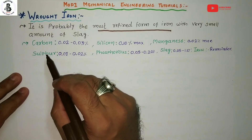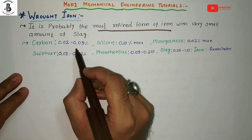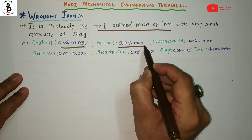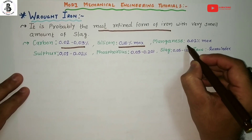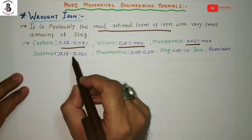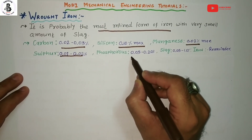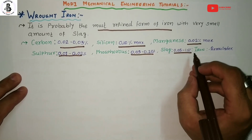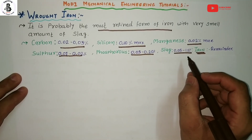Now we will see the chemical compositions of wrought irons. The carbon content is around 0.02 to 0.03 percent. For silicon it will be 0.10 percent maximum. For manganese it will be a maximum of around 0.02 percent. For sulfur it will be 0.01 to 0.02 percent. For phosphorus it will be around 0.05 to 0.20 percent. And the slag will be around 0.05 to 1.5 percent. The remaining part is iron.